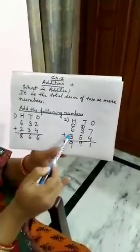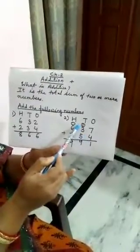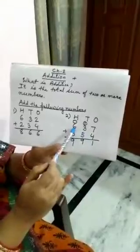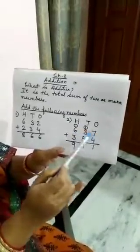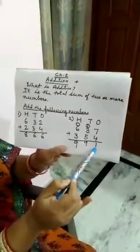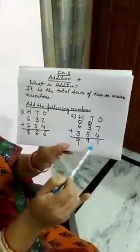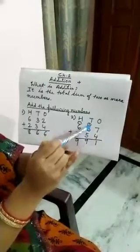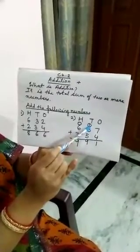Let's move to the next sum. This sum is with carrying number. See how to do. 637, 354. Add 7 plus 4, 11. So 1, we will not write 11 here. We will write only 1. And this 1 will be here. We will write 1 here. That is carrying number.